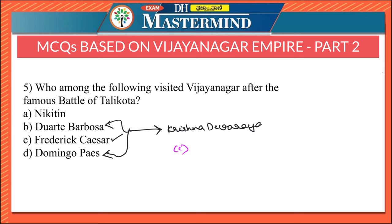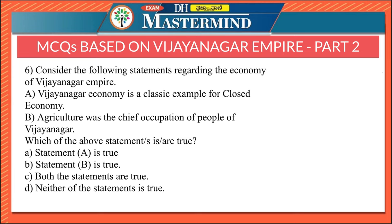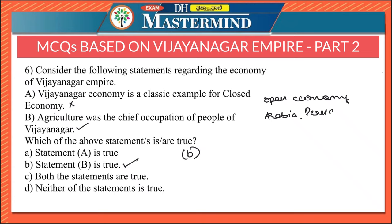The next question considers the economy of Vijayanagara Empire. Statement A says Vijayanagara economy is a classic example of a closed economy; Statement B says agriculture was the chief occupation of people. Statement A is false — the right answer is Option B. Vijayanagara economy is actually a classic example of an open economy, as the empire had commercial contacts with Arabia, Persia, South Africa, and Portugal on the west.